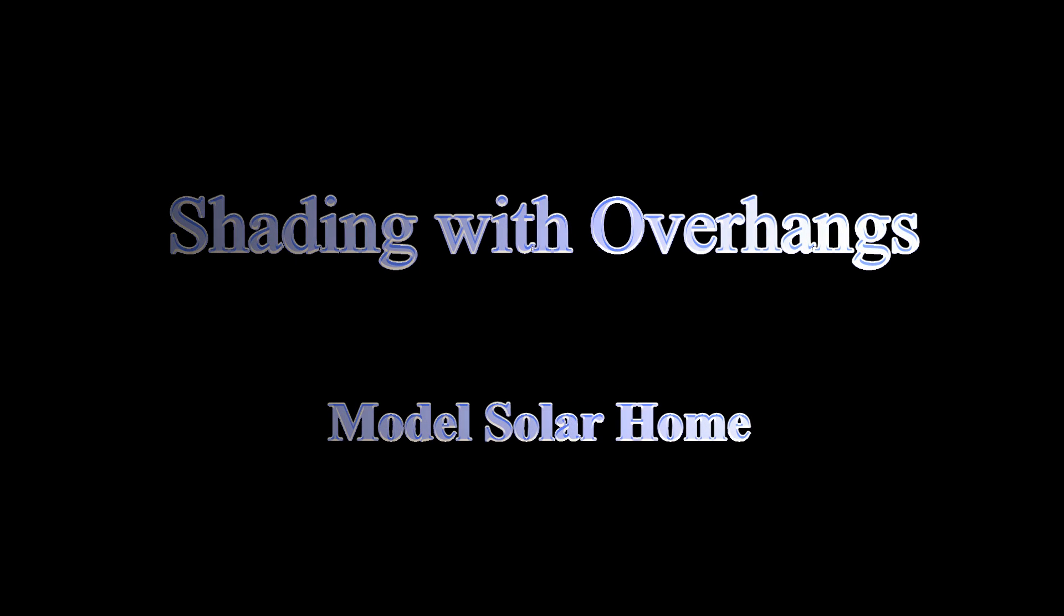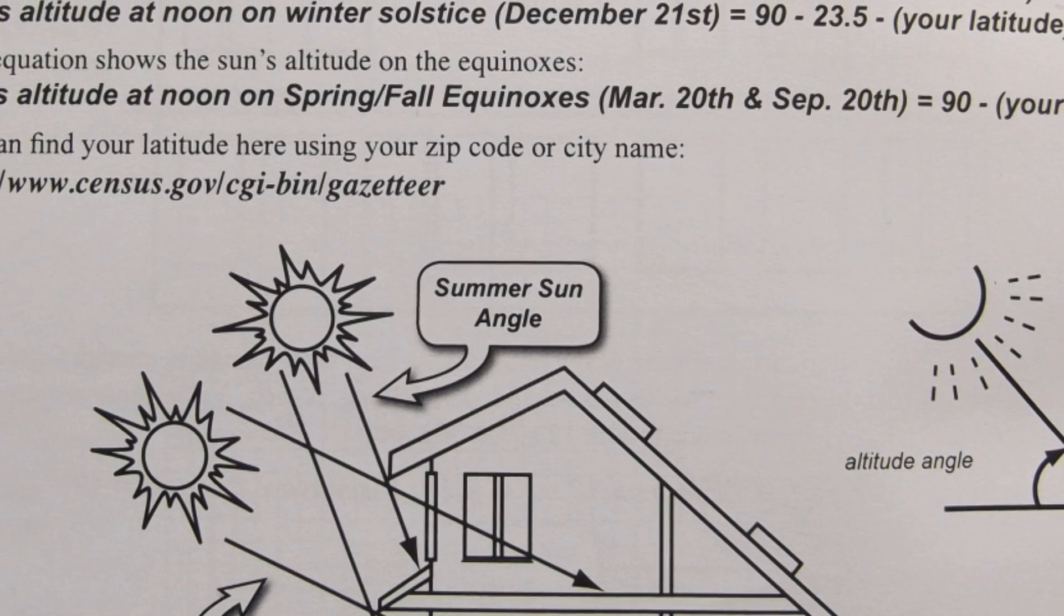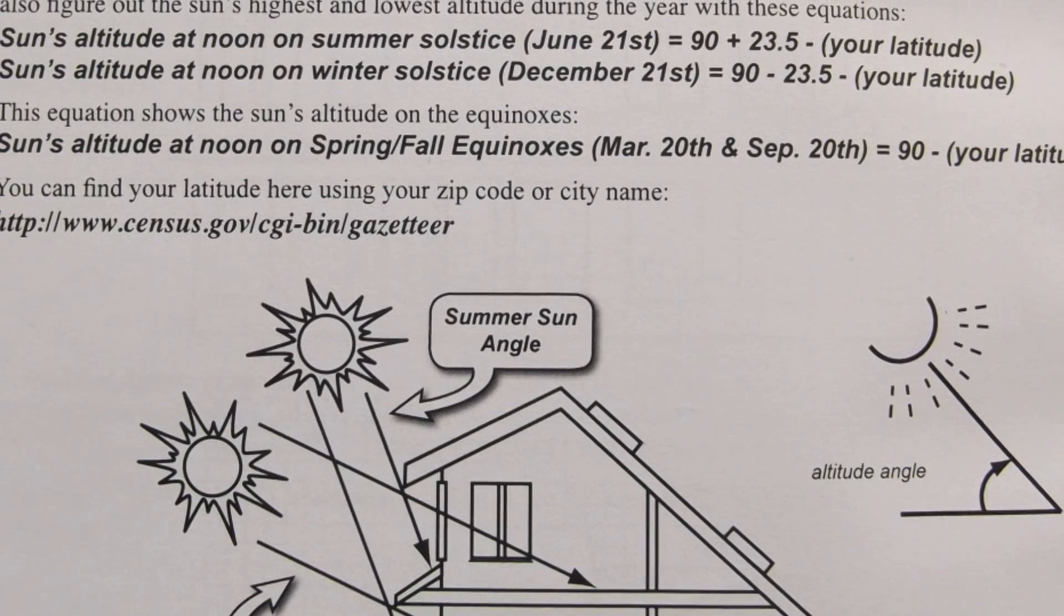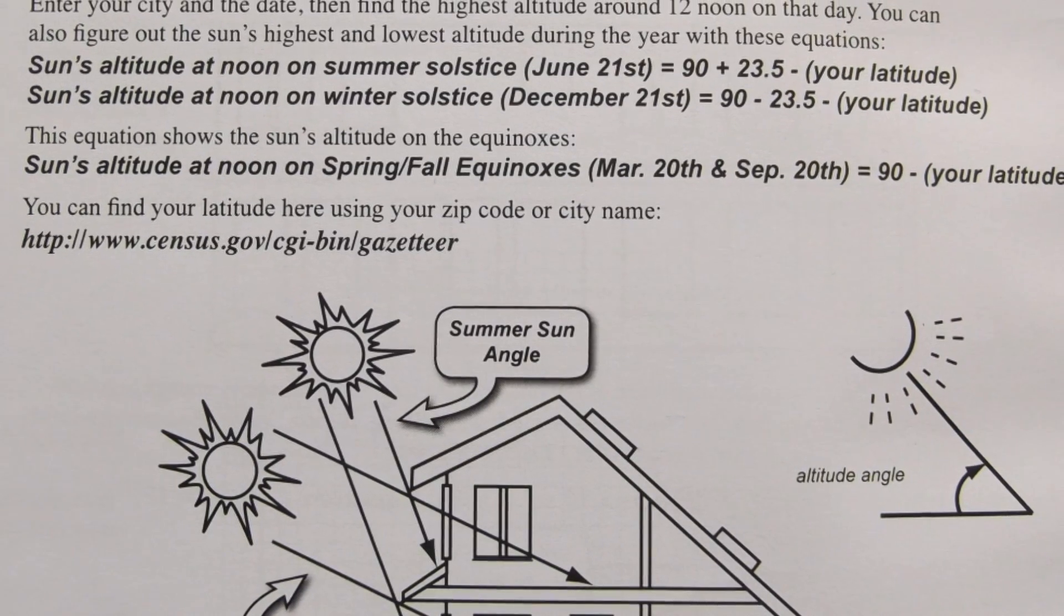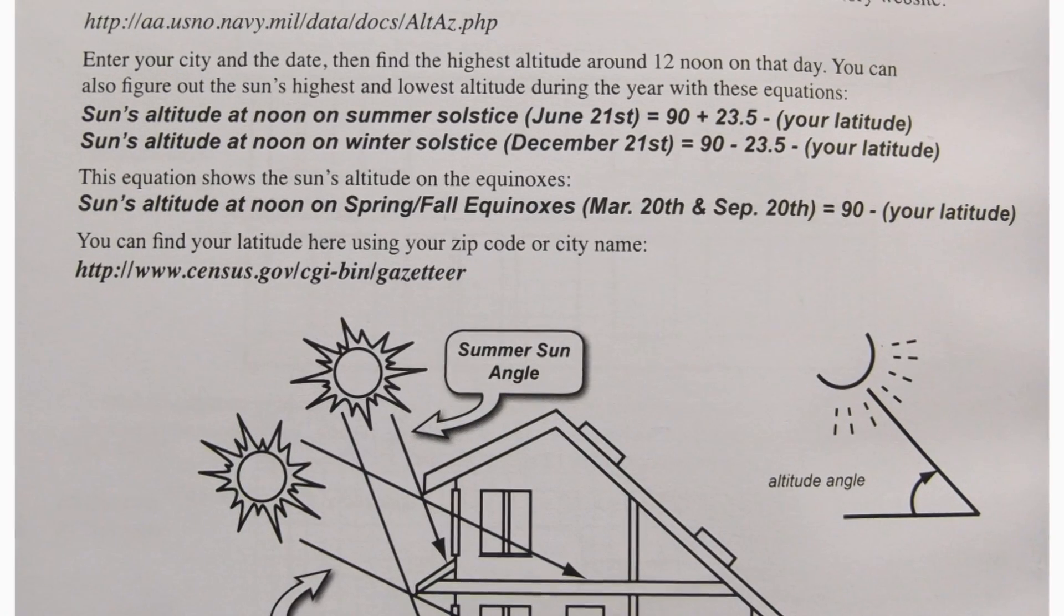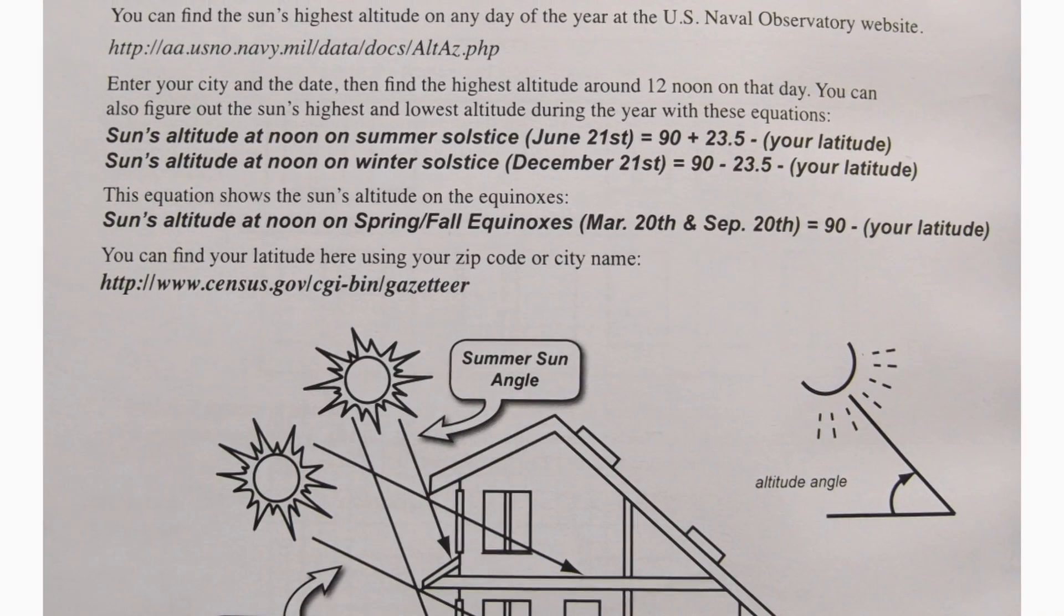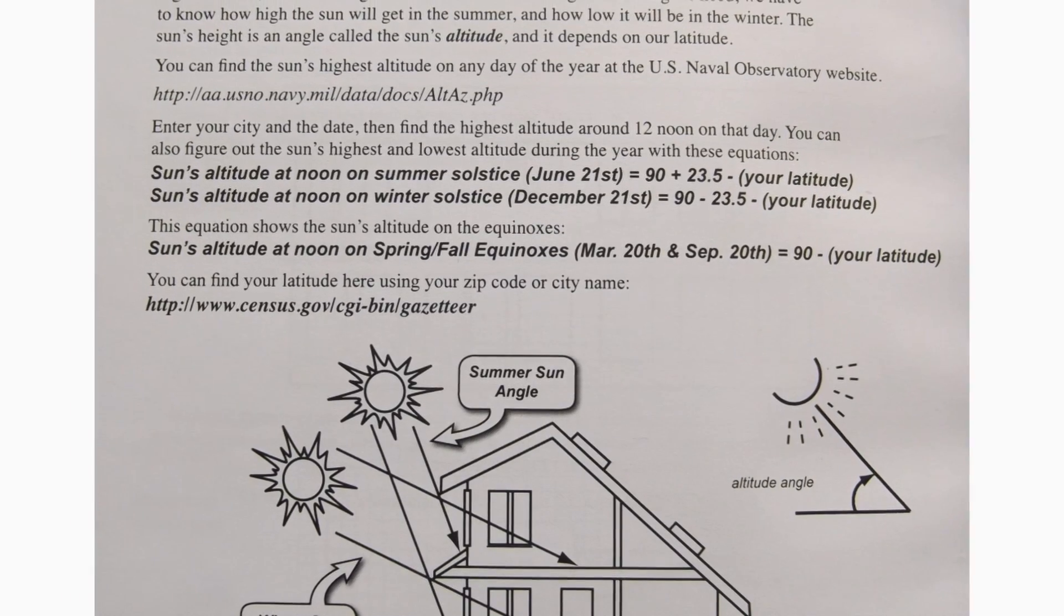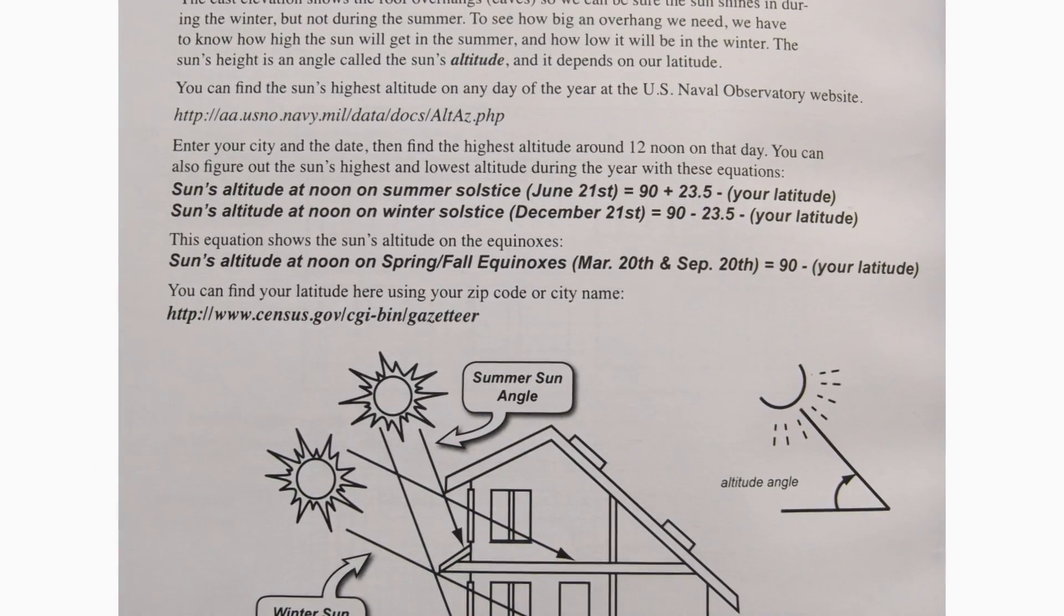A key feature when designing and building a model solar home is the overhang that will shade your south-facing windows. Since the sun's height in the sky changes with our latitude and with the seasons, we have to calculate the length of the overhang so that it allows the winter sun to enter our home but blocks the summer sun's hot rays.